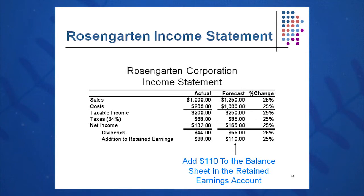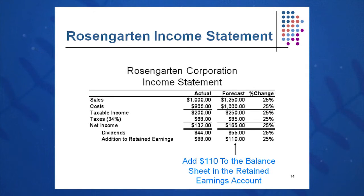I also have to address dividends and additions to retained earnings. Last year, dividends were $44 and additions to retained earnings were $88, totaling the $132 of net income. There are two things I can do with net income: keep it in retained earnings or give it away as dividends — it's a management decision. At Rosengarten last year, we gave away one-third and kept two-thirds. Let's do the same thing in the forecast year.